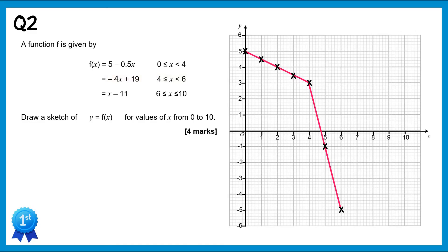The final part is x minus 11 for x values from 6 to 10. We already have (6, -5). Then x=7 gives -4, x=8 gives -3, x=9 gives -2, and x=10 gives -1. Connect these up and there's our function.